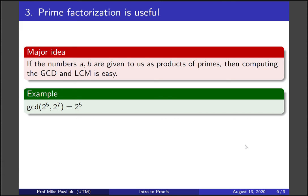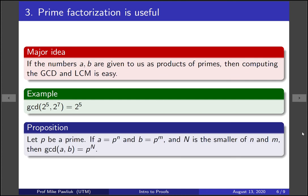That's the largest possible thing we could take because it uses up all of 2 to the 5, and then there's two other factors of 2 in this term. This proposition can be expressed more generally. There's nothing special about 2, 5, and 7 here. So let p be a prime. If a is a power of a prime, p to the n, and b is a power of the same prime, p to the m, and capital N is the smaller of the two exponents, then the GCD of these two numbers is p to the smaller exponent.